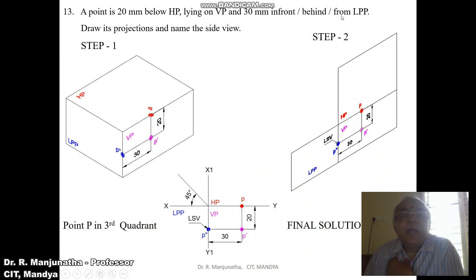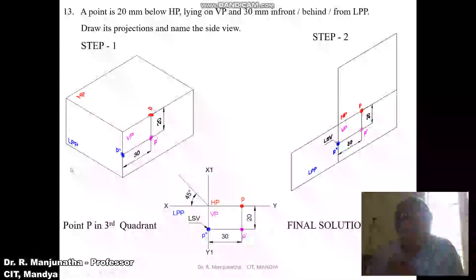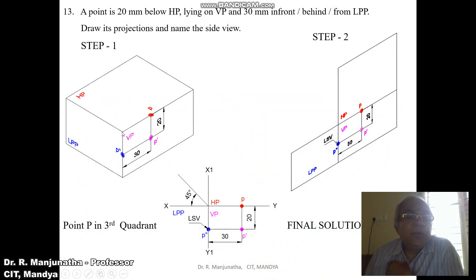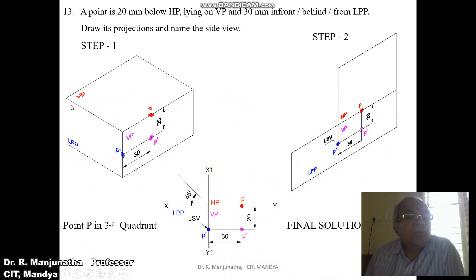30mm behind LPP is seen in VP, and also when you look from the top view it will be seen in HP, so you are going to get 30mm. When you look from the left side view, you can see the distances of below HP and also on VP, so you get this point. You can see the distances of the front view as well as the top view when looking from the profile view.